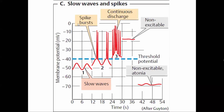There may be one spike, many spikes, or no spike at all. The frequency of the spike potential determines the strength of contraction of the muscle. If there is less spike potential, then there is less contraction; if there is more spike potential, then contraction is more. If there is no spike potential, then the longitudinal and circular smooth muscles will not contract.